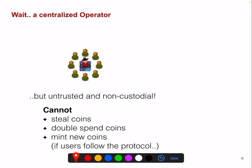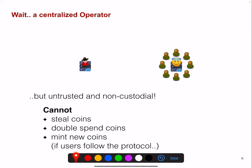You might say there's a centralized operator, but it is untrusted and non-custodial. If users follow the protocol, the operator should not be able to steal coins, double-spend coins, or mint new coins. If the operator is malicious and sends fraudulent transactions, users can migrate to a new hub. However, migrating to a new hub is quite cumbersome — similar to migrating to a new chain, which most users don't want to do. So this is still a burden on users when a centralized hub operator would misbehave.